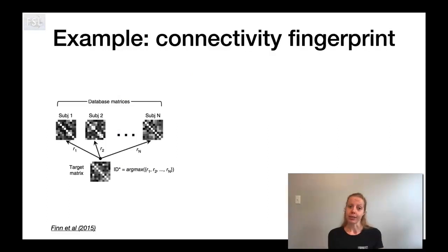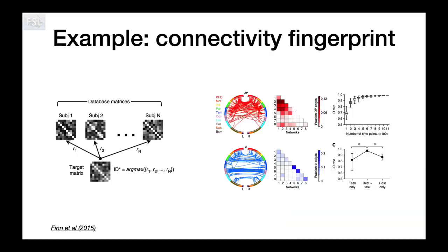Another example is a paper by Emily Finn, which used the network matrix and tried to see whether you can use this information across edges as a fingerprint. Is there unique individual information in this network matrix that allows you to identify one subject out of a group of subjects? They used a prediction framework and showed that yes, there is a lot of unique individual information. So you can use a network matrix, much like a fingerprint, to identify an individual subject out of a group of subjects.